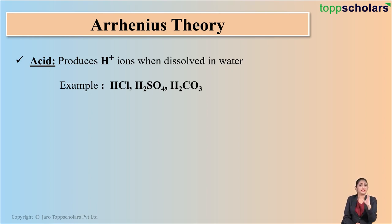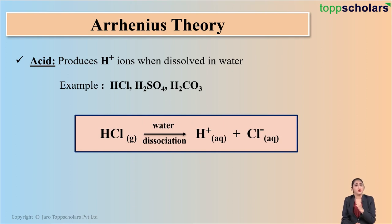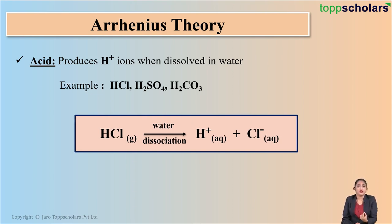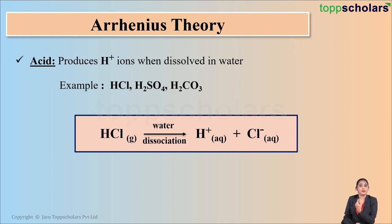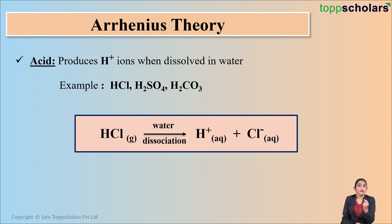Let's take the first example, HCl, that is hydrochloric acid. I have dissolved it in water. Acids are substances which on dissolving in water give you H+ ions. This HCl dissociates in water — dissociating means splitting up into ions, that is cation and anion. HCl on dissolving in water undergoes dissociation to give you H+ ion and Cl- ion. We've got H+ ion, which means that HCl is an acid according to Arrhenius theory.